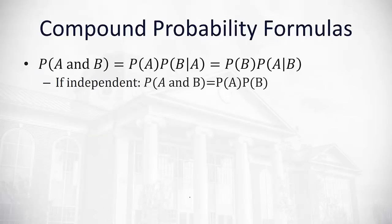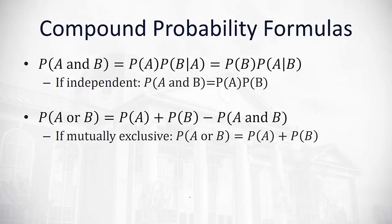Now for the formulas. To calculate the AND probability, we take the probability of one event times the probability of the second event given the first already occurred. If the events are independent, that simplifies to just the probability of A times the probability of B. For the OR, we add the individual probabilities of A and B, then subtract the probability of A and B to remove the double-counted overlap.